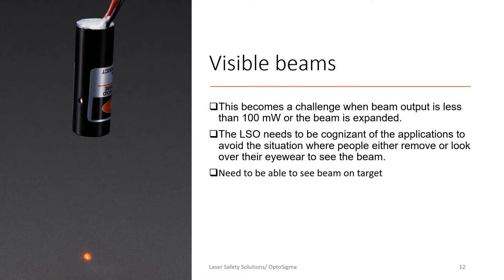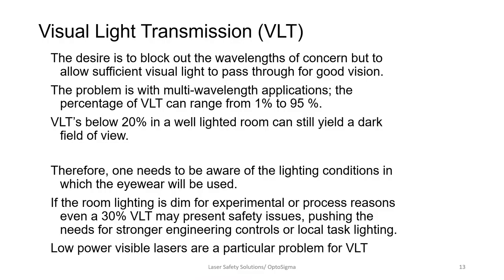Visible laser beams below about 100 milliwatts are a real challenge because almost every pair of eyewear, no matter what the optical density, will pretty much make the beam go away so you can't see anything — which goes back to the issue of alignment. We'll talk more about that later.